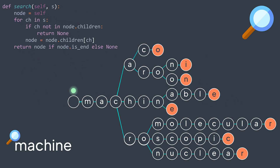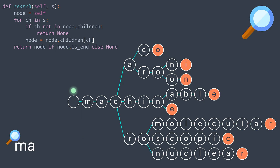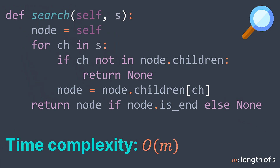For example, in this trie, if we search for 'machine', we start from the root and traverse M, A, C, H, I, N, E, and we return that node. But if we search for 'ma', we find M and A, but A is not isEnd, so we return null. This method also has O(m) time complexity.